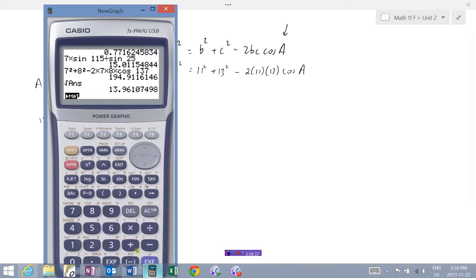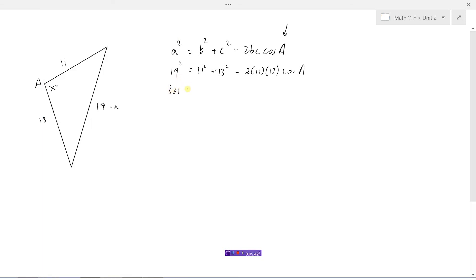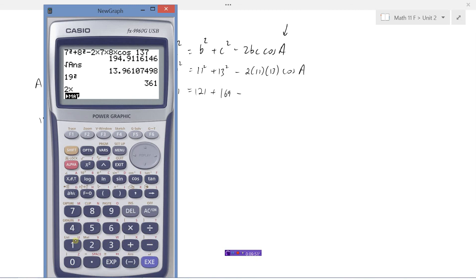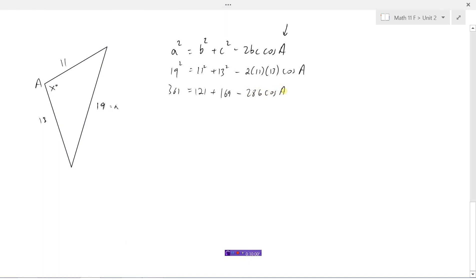So let's work some numbers out here. 19 squared, 361, equals 121 plus 169 minus 2 times 11 times 13, 286, cosine a. So we can add these numbers up, 121 plus 169 is 290. But we can't subtract these two because this number is attached to this by multiplication. So now that we've added these up to 290, we will subtract that from both sides. That gives us 71 equals negative 286 cosine a. Now we can divide by negative 286. Now we've isolated cosine a.